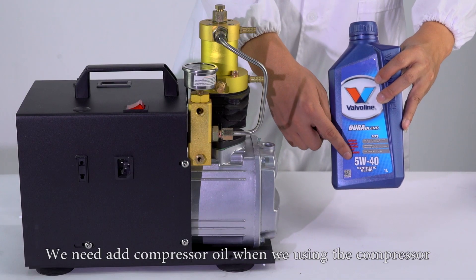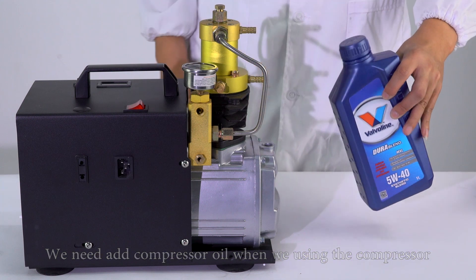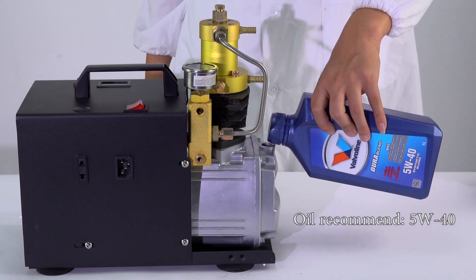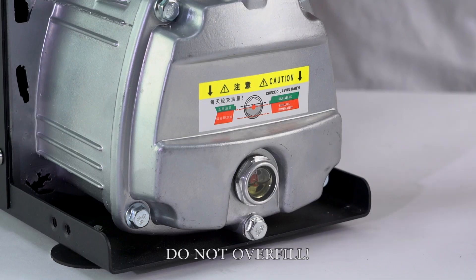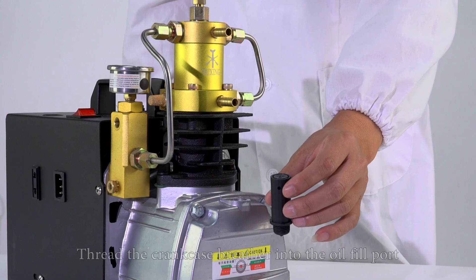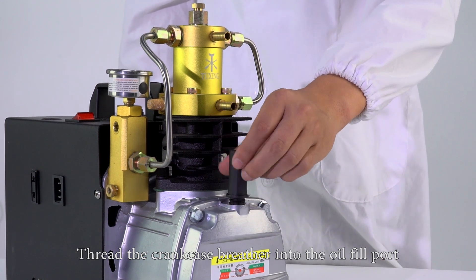We need to add compressor oil when we are using the compressor. Oil recommended is 5W-40. Fill oil up to the red indicator dot. Do not overfill. Thread the crankcase breather into the oil fill port.